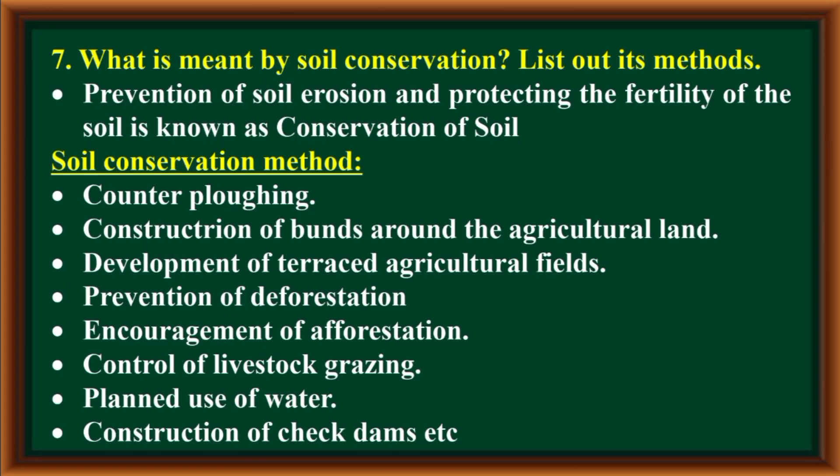What is meant by soil conservation? List out its methods. Prevention of soil erosion and protecting the fertility of the soil is known as conservation of soil. Soil conservation methods include: contour plowing, construction of plants around agricultural land, and development of terraced agricultural fields.